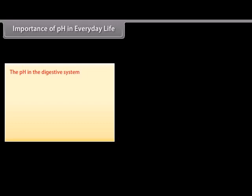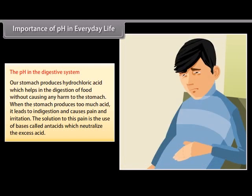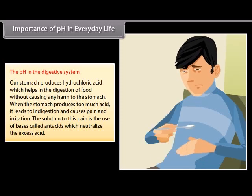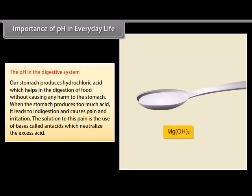The pH in the digestive system. Our stomach produces hydrochloric acid, which helps in the digestion of food without causing any harm to the stomach. When the stomach produces too much acid, it leads to indigestion and causes pain and irritation. The solution to this pain is the use of bases called antacids, which neutralize the excess acid.